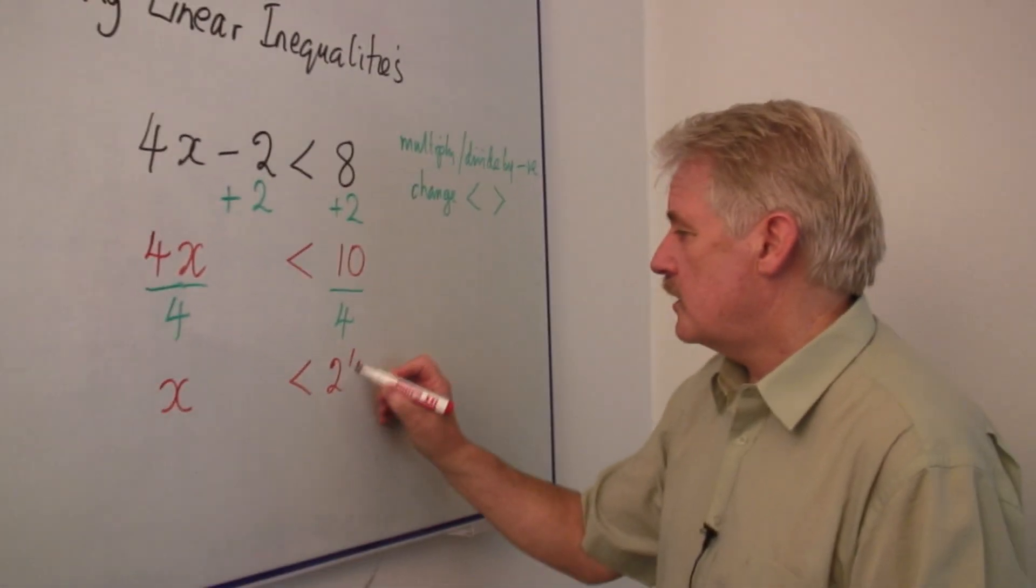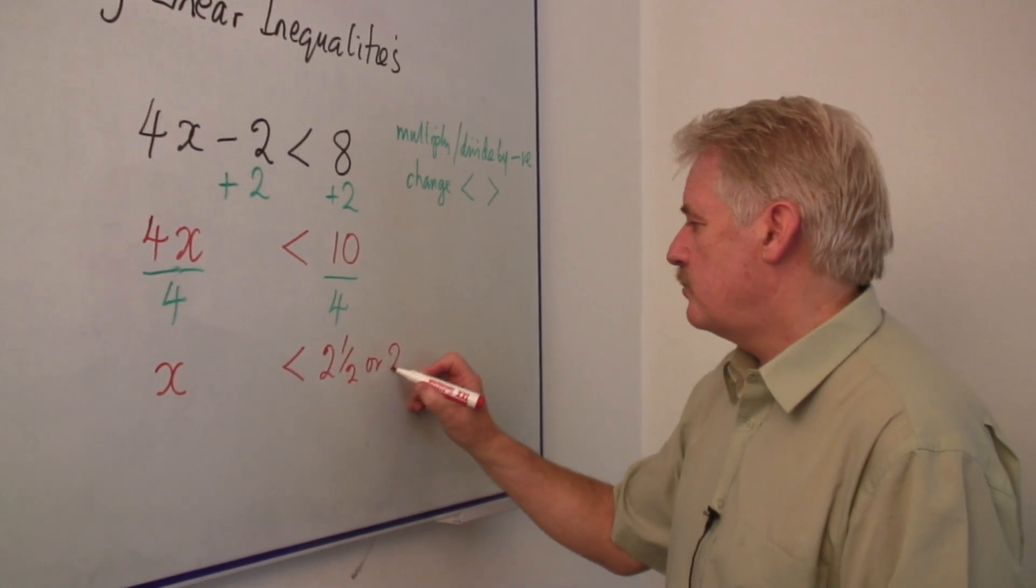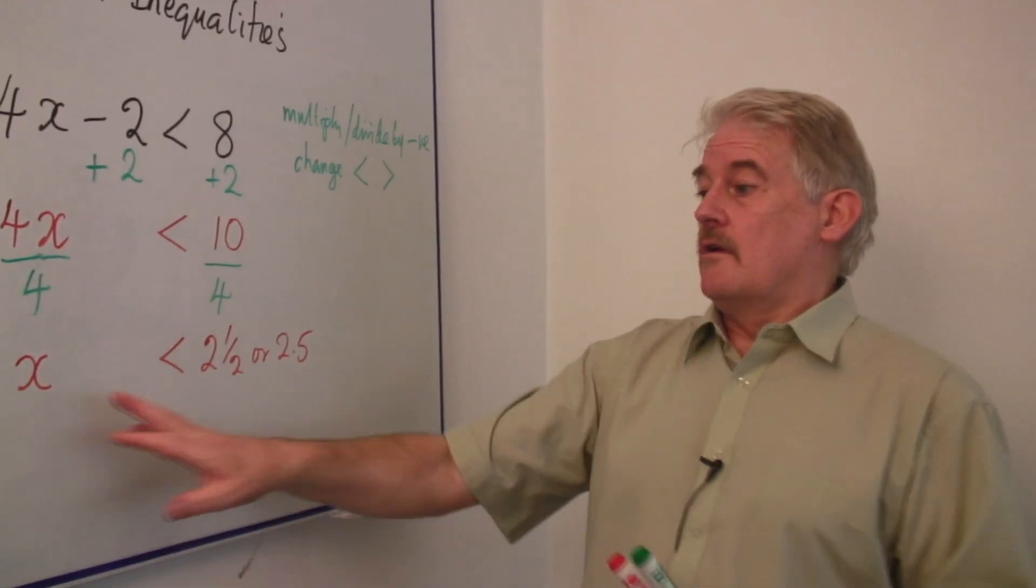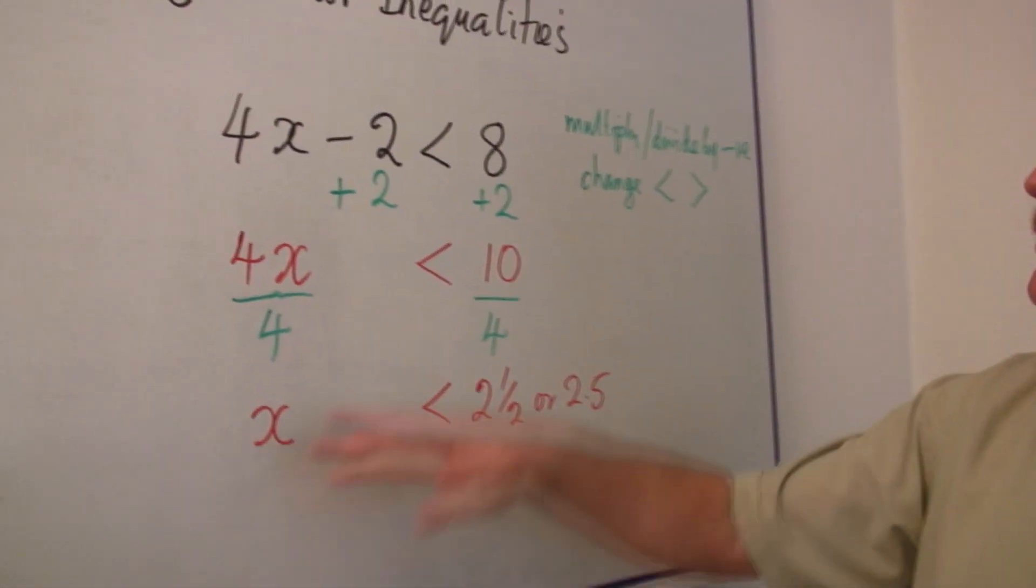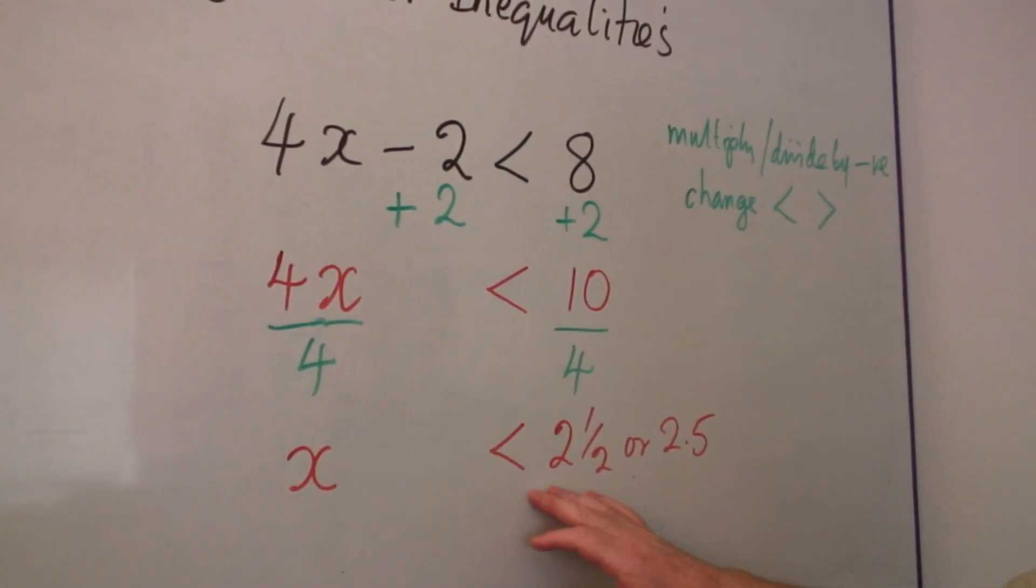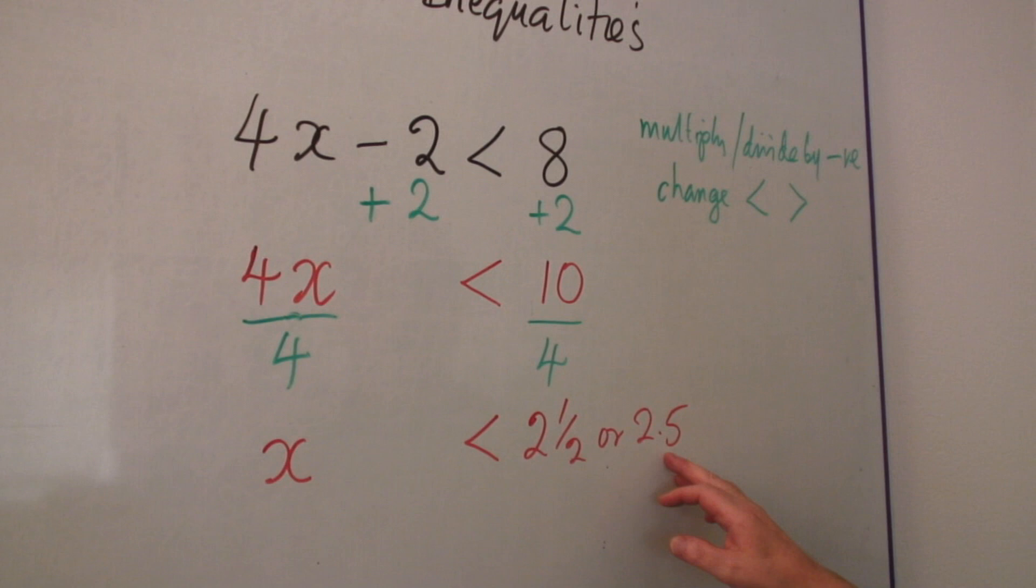So x is 2 and a half or 2.5, depending on how you're asked to express the result. So essentially what we're saying here, we've solved the inequality. We know that the value of x is less than 2 and a half or 2.5.